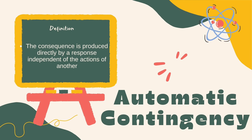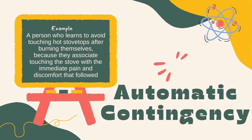Automatic contingency refers to a situation where a person's behavior is influenced by the immediate consequences that follow from their own actions, without input or feedback from other people. An example is a person who learns to drive more cautiously after experiencing a car accident, because they associate the accident with the negative consequences that followed. Another example is a person who avoids touching hot stove tops after burning themselves, associating the stove with the immediate pain and discomfort.